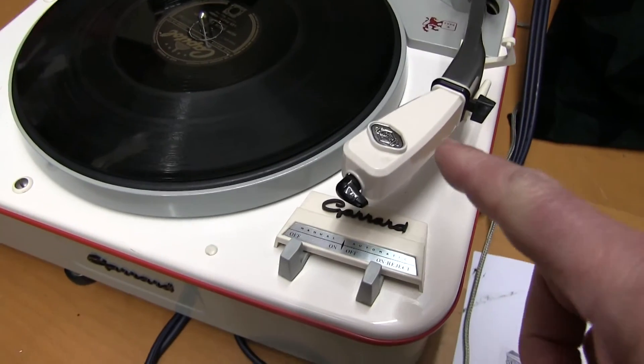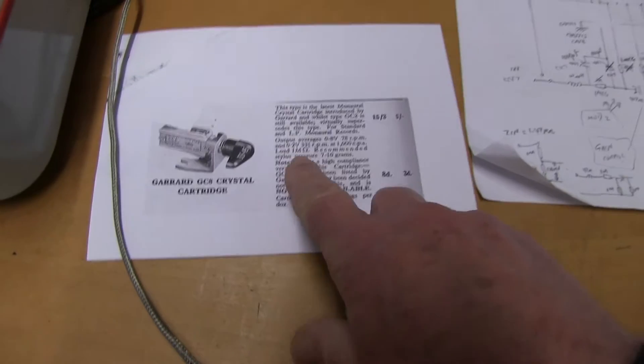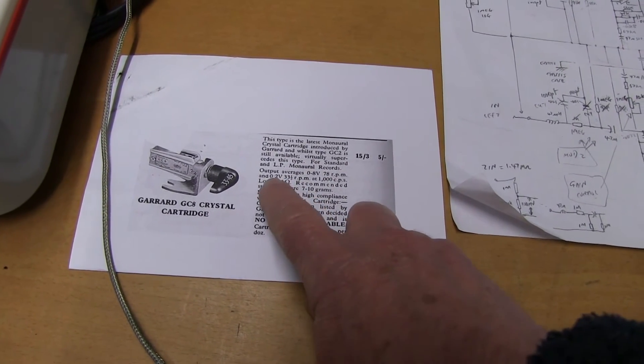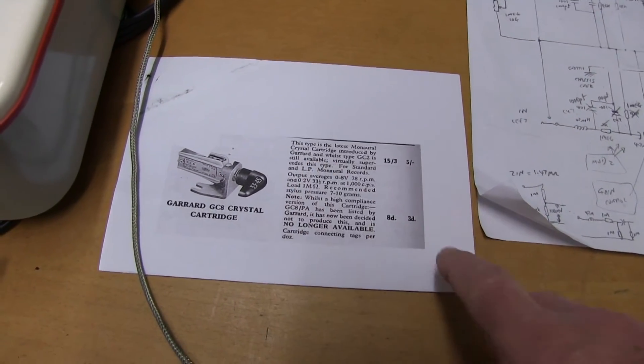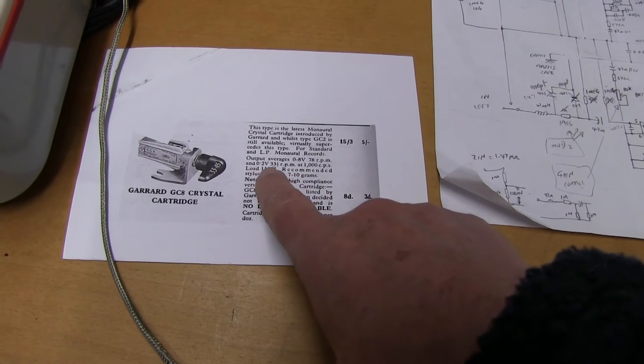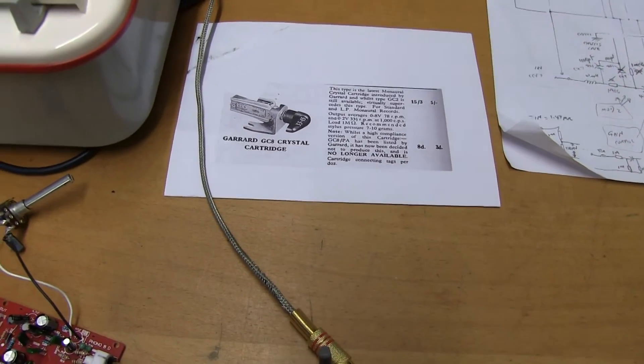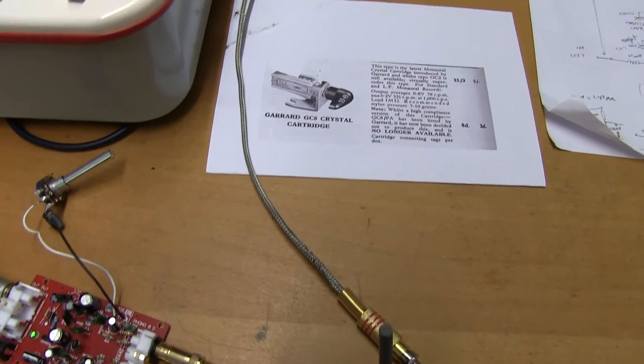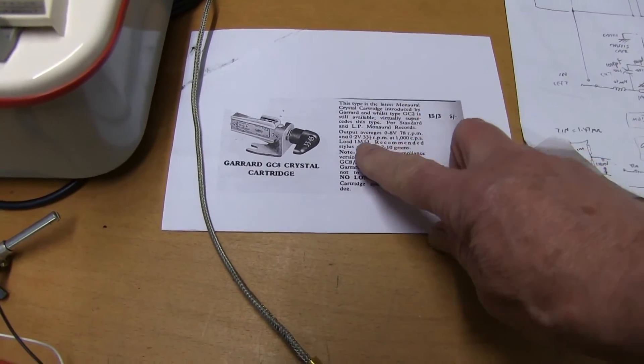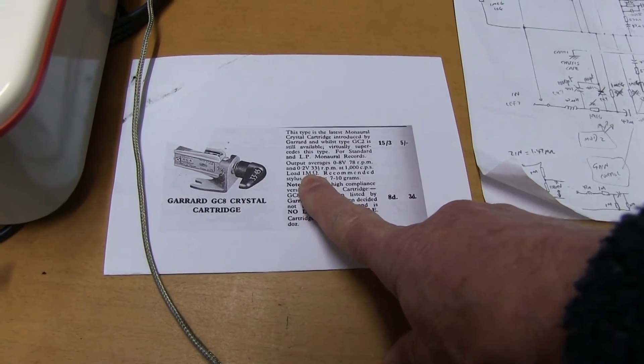These old record players have crystal pickups. This one's got a mono pickup so it just comes out on one channel. It's got very high output: 78 rpm talks about 0.8 volts, 800 millivolts, and 33 revs 200 millivolts. Considering the moving magnet on most record players that you buy these days would have, or an MC cartridge, would have much less - moving magnets it's about five millivolts. So if you try and feed this directly into a phono input on your amp, it would be hideously distorted. But if you try to feed it into your auxiliary or CD input on your amp, it will also not sound good because it needs a high resistance load, one mega as suggested, and all amps are probably about 47 kilohms which is very low.